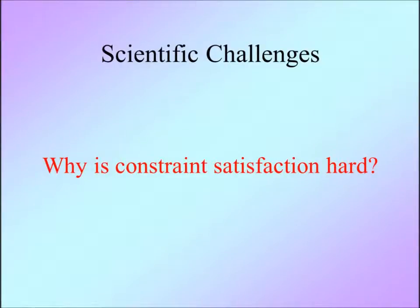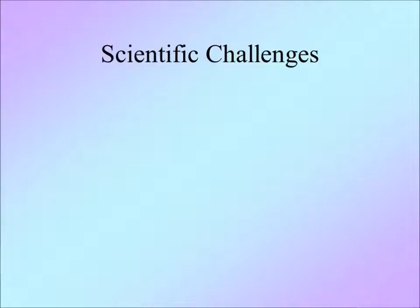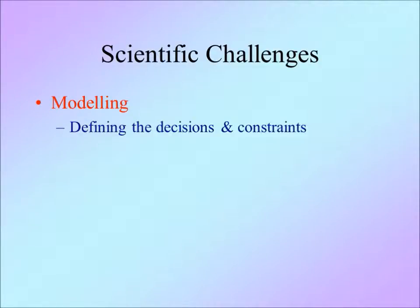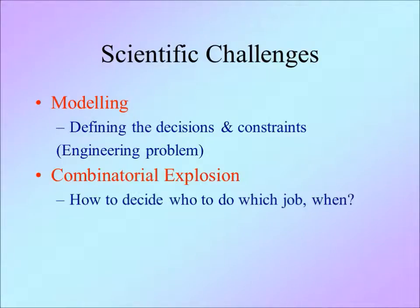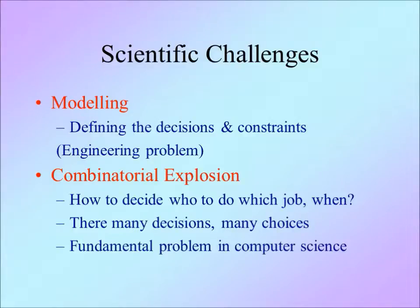Constraint satisfaction is a hard problem. The first challenge is in modelling — you have to decide what the decisions and constraints should be. This is an engineering problem. After the problem is formulated, finding the solutions is hard. Take the British Telecom problem as an example: there are thousands of decisions to be made every day, with many times more constraints. The sheer number of combinations means that exhaustive search is out of the question. This is called combinatorial explosion — the very problem that makes chess challenging and passwords hard to crack. It is a fundamental problem in computer science.